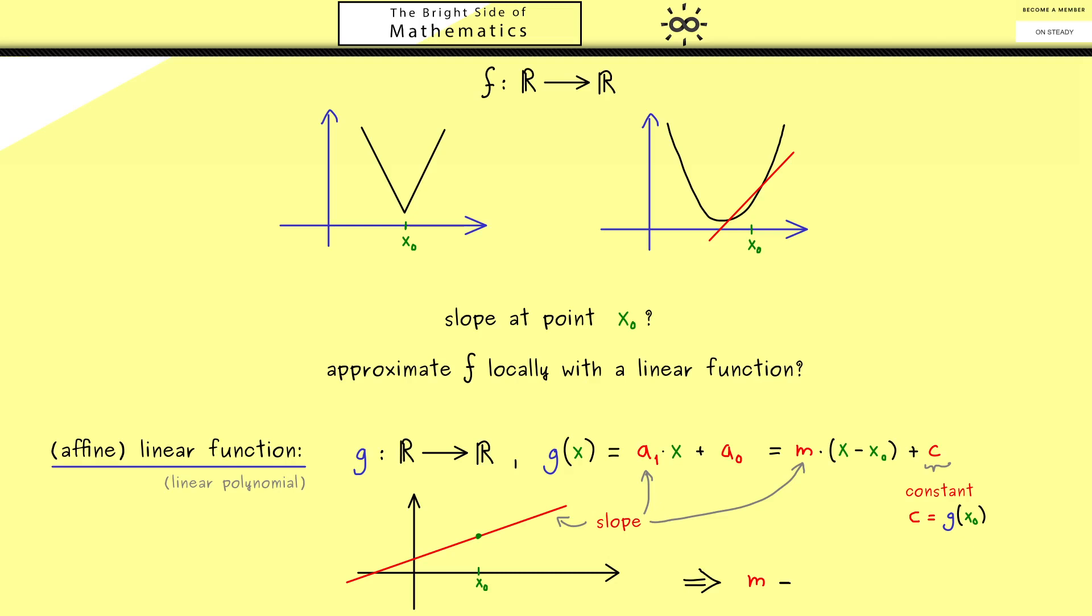First let's do it for a function with domain ℝ. And as before we want a local approximation at a given point x₀. Therefore let's look again at the graph of the function. For example it could look like this. And now we want the linear approximation around this point x₀.